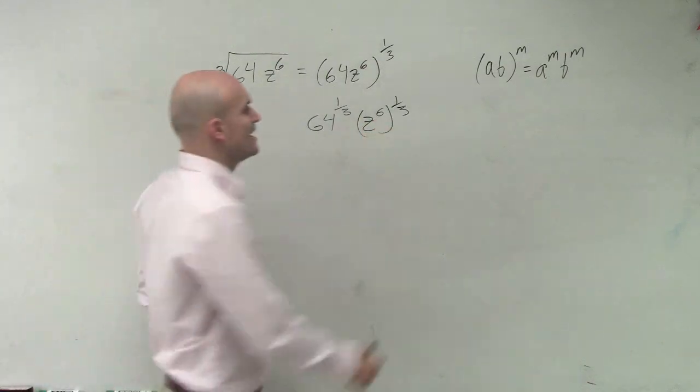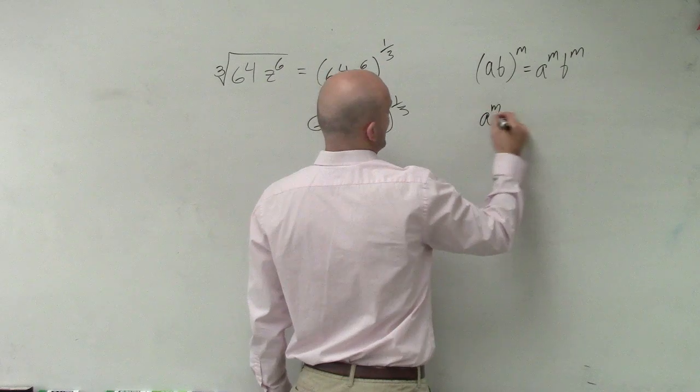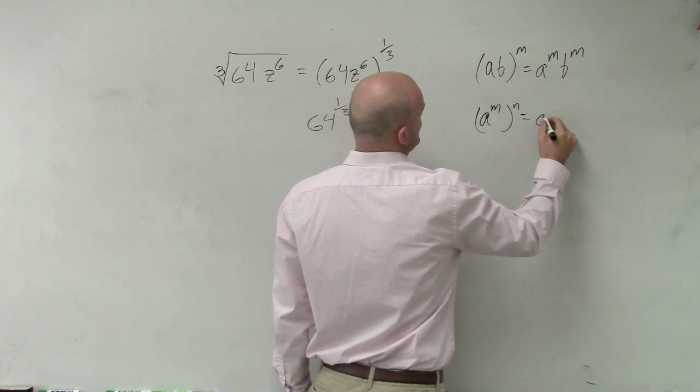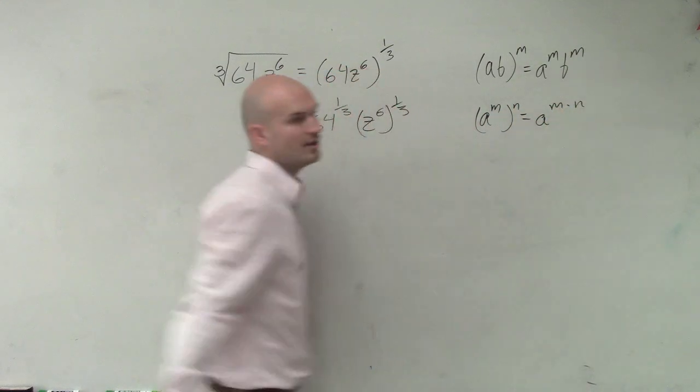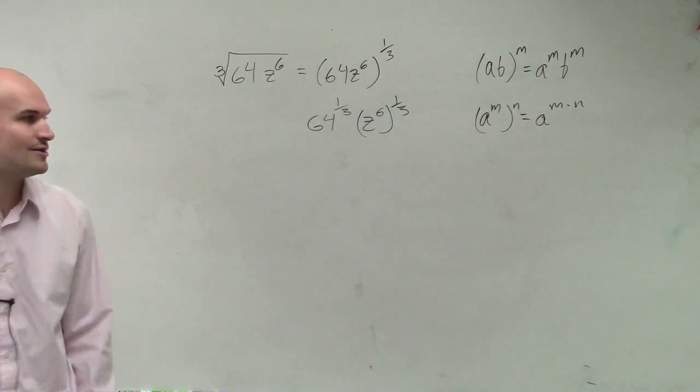And we remember this is whenever you have an exponent, a to the m times n, that equals a to the m times n, right? I'm just going through these laws of exponents, these rules of exponents you guys need to remember.